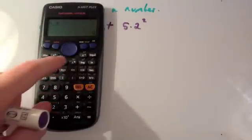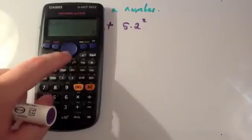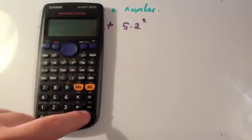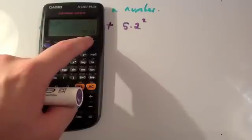So you do 5.2, and you press this X with little 2, and you'll see you've got the little squared symbol. Press equals, and you'll get 27.04.